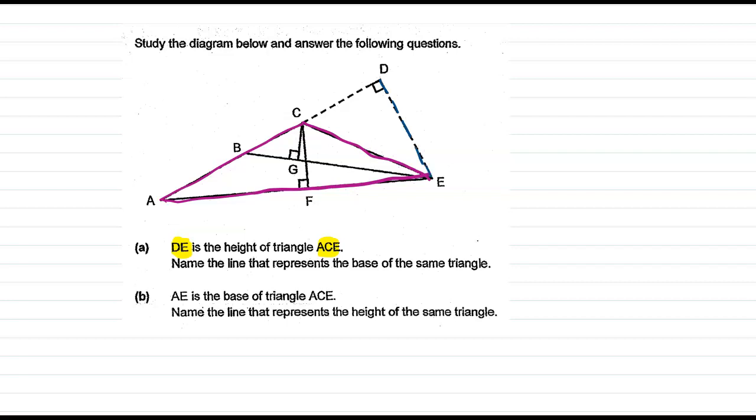So name the line that represents the base of the triangle. Height is always drawn from the topmost point to the bottom most point, and it should be perpendicular. It is a straight line dropped from the topmost point.